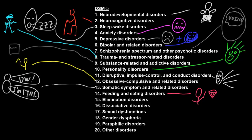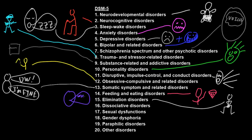The elimination disorders involve distress or disability from urination or defecation at inappropriate times or places. The dissociative disorders — some of the people with these disorders seem to have multiple personalities or may have lost memory for parts of their lives.